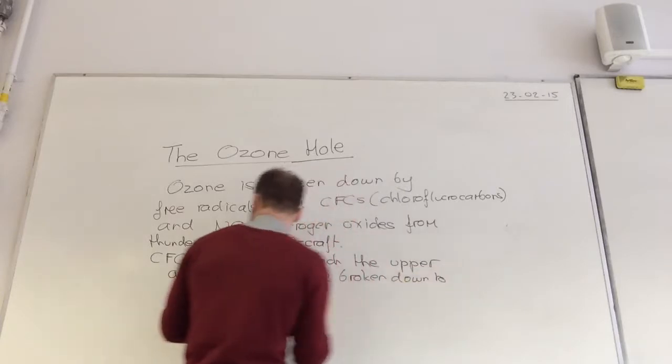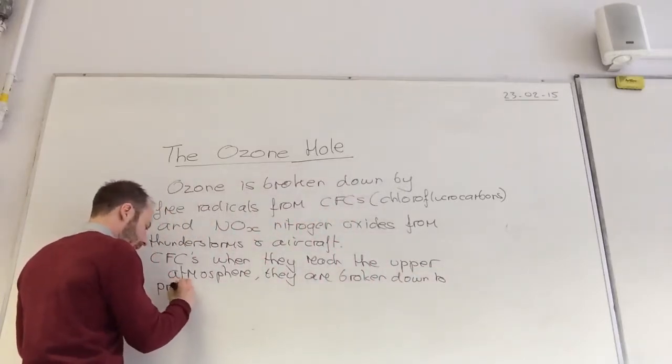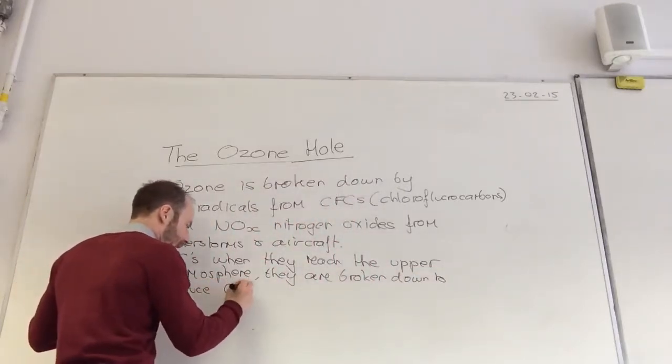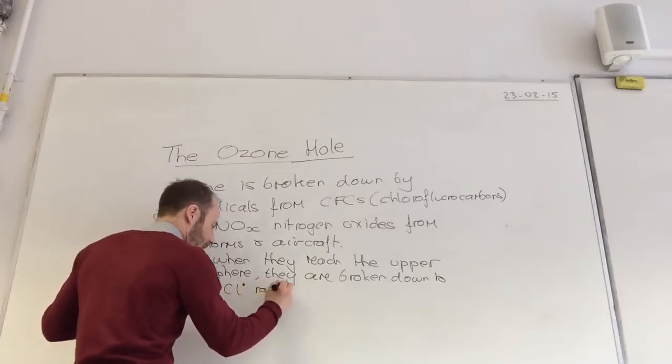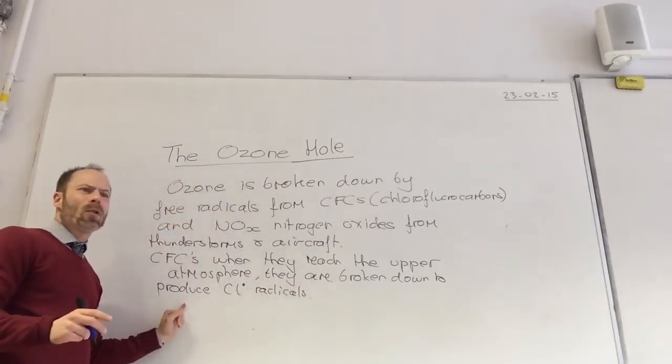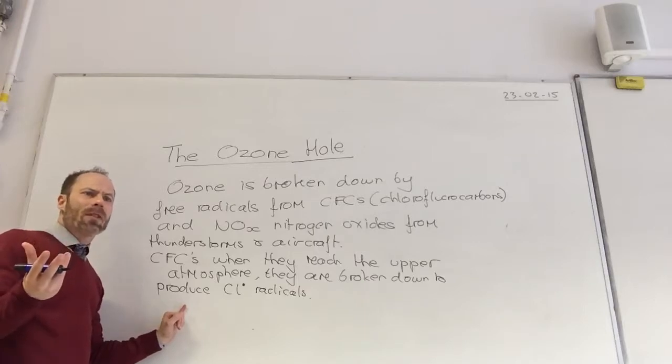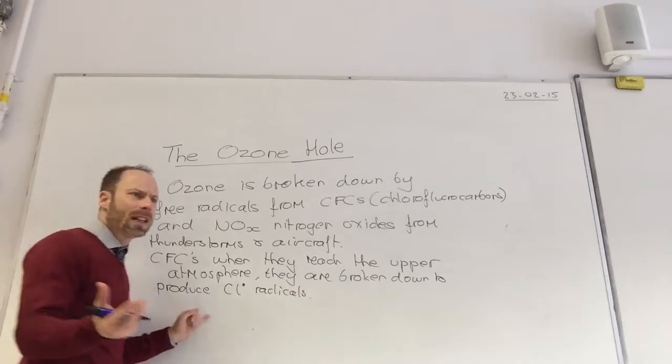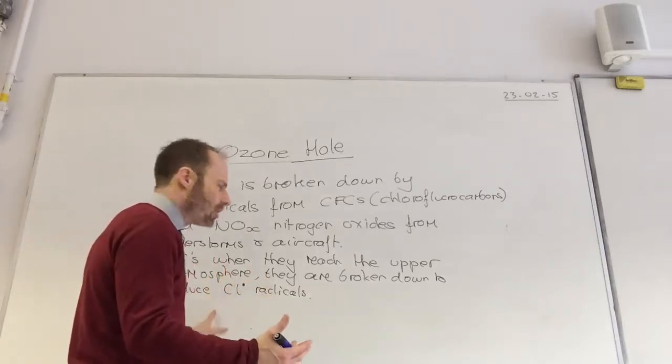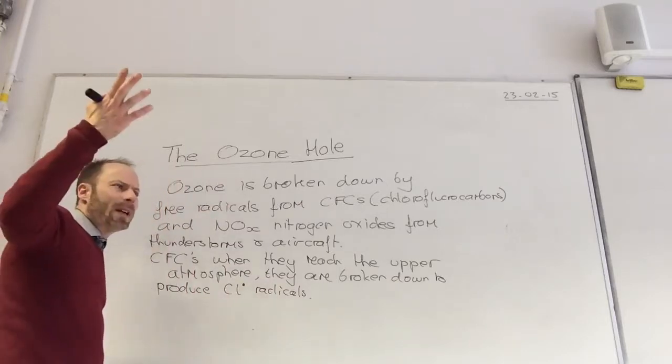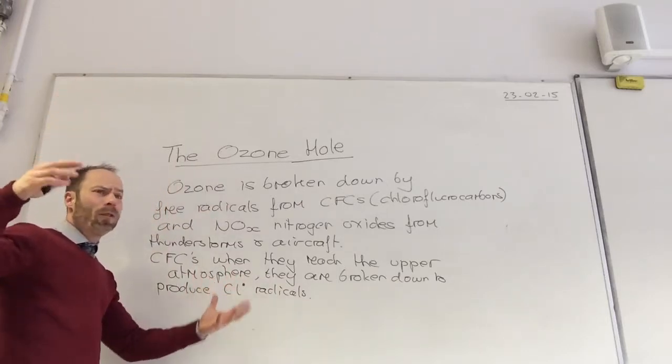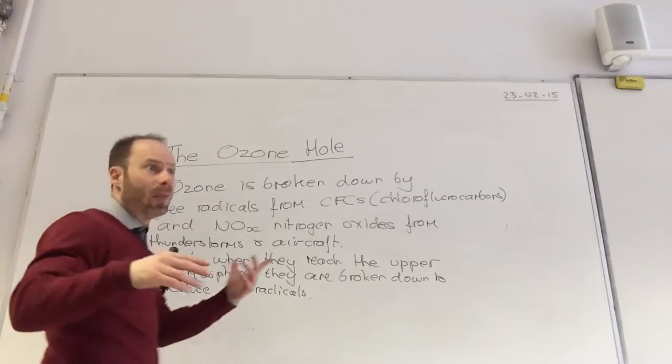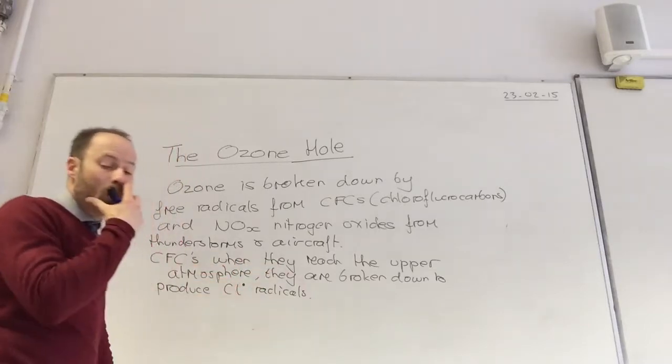To produce Cl radicals. That makes sense here from the organic chemistry. You've talked about free radical substitution reactions, and it gets broken down. So you've got them up in the atmosphere, they break down. Chlorofluorocarbons are really stable, but up there they're going to get broken down.